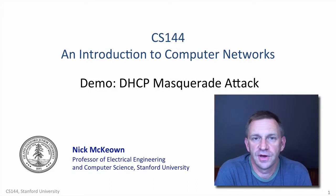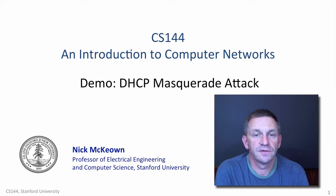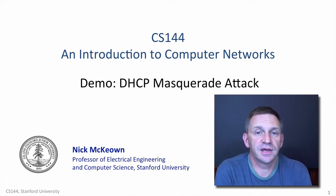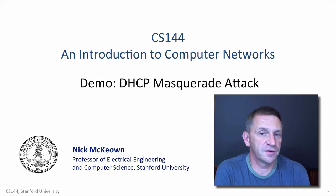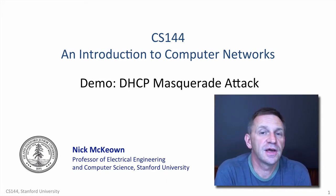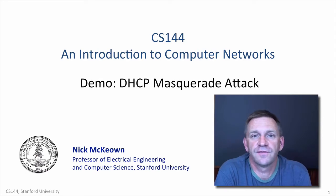In the following video, I'm going to demo how an attacker can masquerade as a DHCP server, forcing Alice's machine to be incorrectly configured. She's going to be forced to use a rogue DNS server, taking her to the wrong IP addresses for web servers she's trying to access.